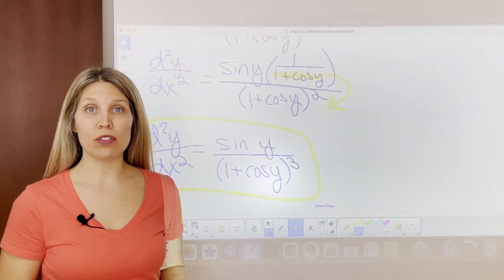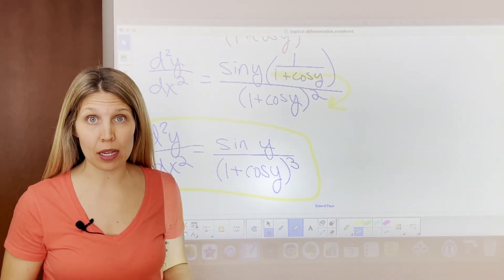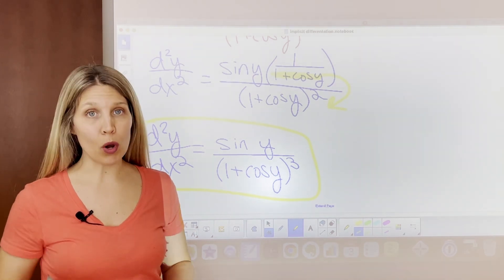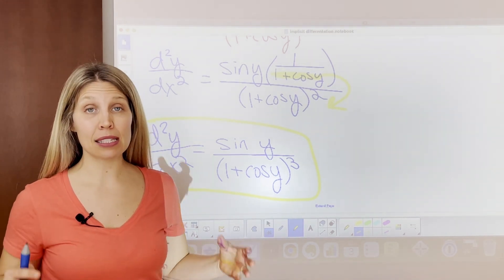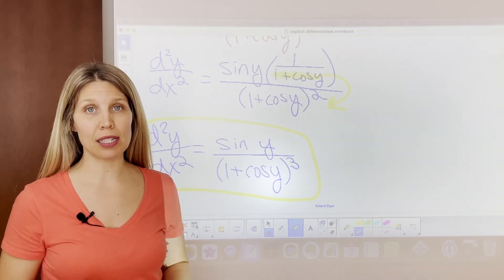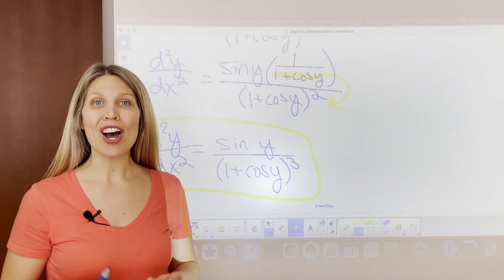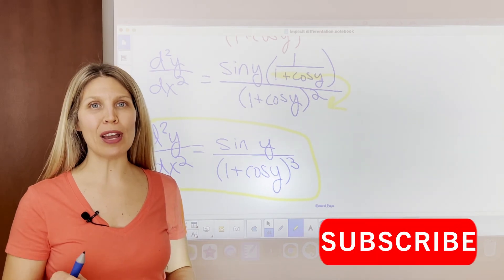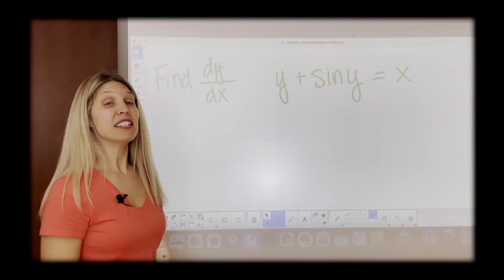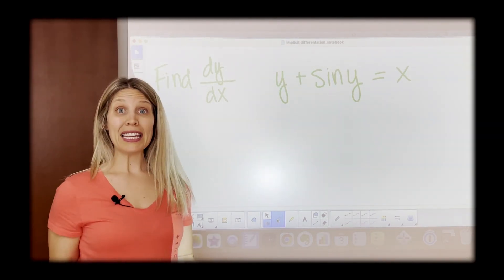I hope this video helped you understand that implicit differentiation is something you've actually already been doing, but the y has always been on one side of the equation. Now that y is inside the equation and intermixed with the x values, you just have to remember to multiply by y prime anytime you take the derivative of y. Hope this video has been helpful — be sure to subscribe below and share with someone else taking calculus.